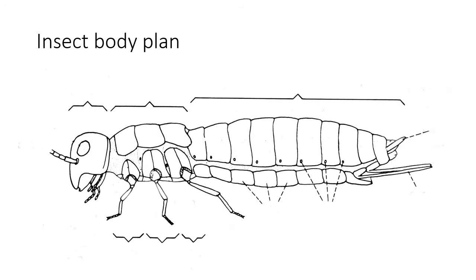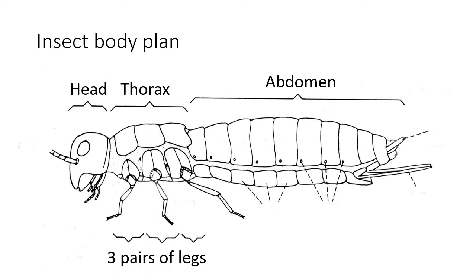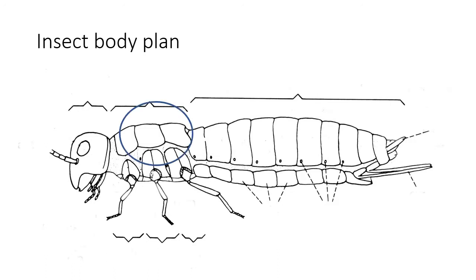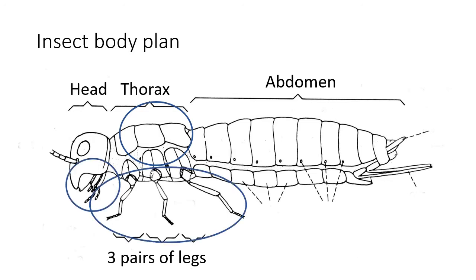The insect body plan can be divided into three main regions: the head containing the antennae, eyes and mouth parts; the thorax that has the legs and wings; and finally the abdomen that contains a large portion of the digestive system and the reproductive organs. Some of the important areas to study and identify common insect orders include the wings, the legs, the mouth parts and the antennae.